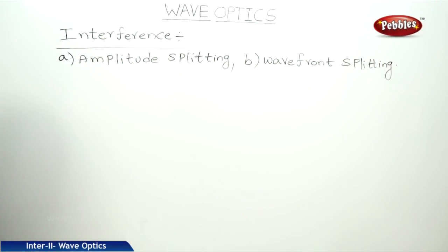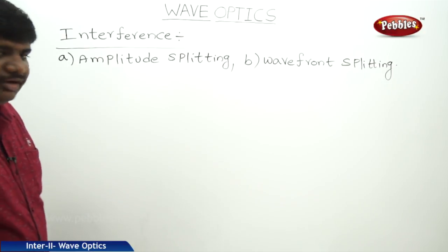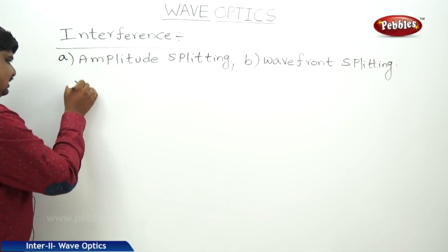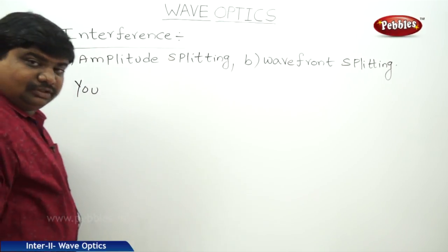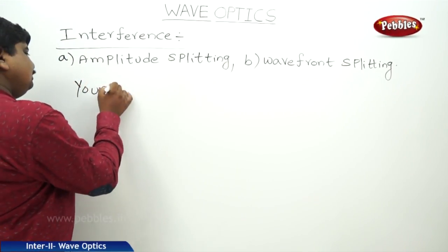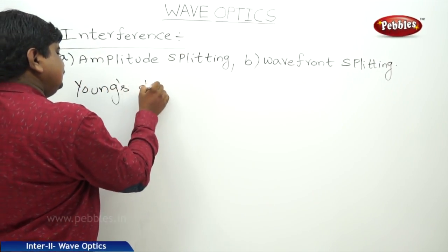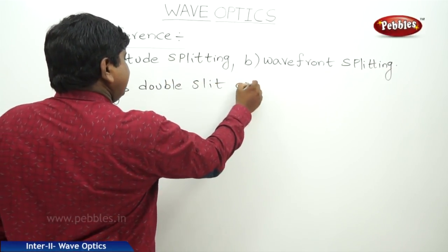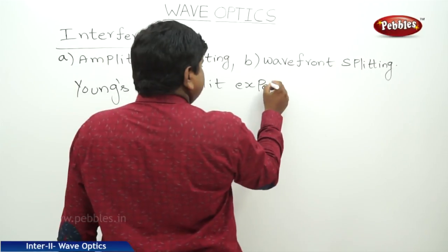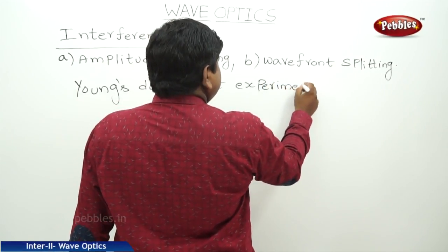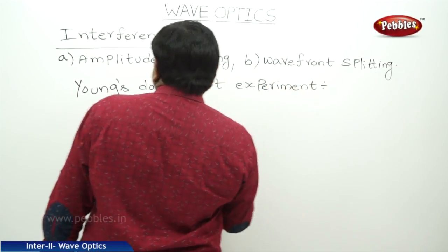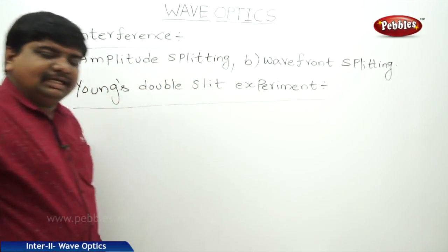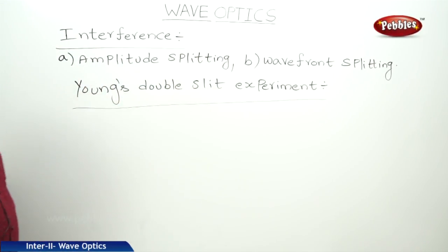In amplitude splitting and wave front splitting, what we can understand is Young's double slit experiment demonstrates both. Young's double slit experiment is a sub-concept, or one of the demonstrations of the interference of light.